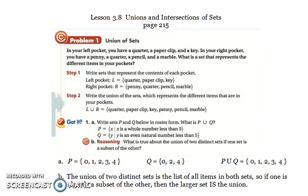Okay, write the union of the sets. Union just means what are all the different items. So what that means is you're not going to list the same thing twice. So even though you have a quarter in both pockets, you're only going to say quarter once. So you have a quarter, a paperclip, a key, a penny, a pencil, and a marble. Even though you technically have two quarters, we only write that once.